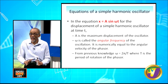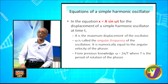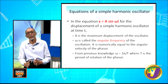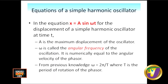In the equation x = A sin(ωt): A is the maximum displacement, also called the amplitude. Omega (ω) is called the angular frequency of the oscillation — numerically equal to the angular velocity of the phasor. From previous knowledge, ω equals 2π over T, where T is the period of rotation.